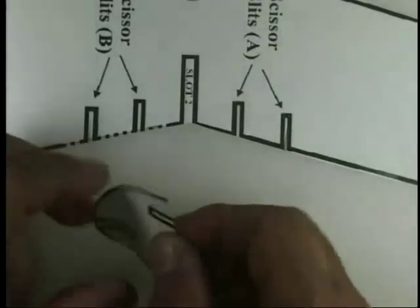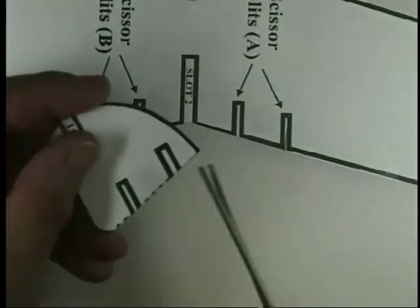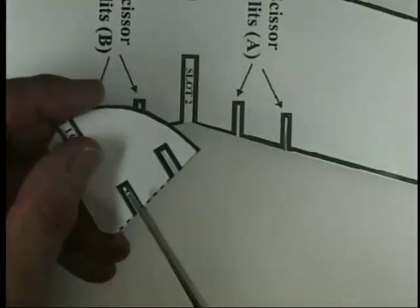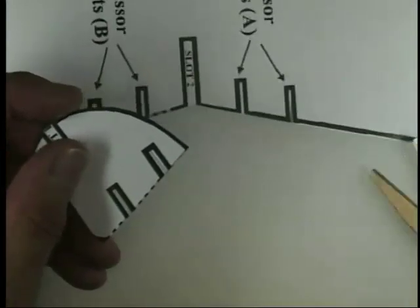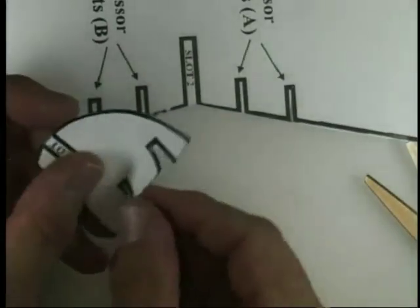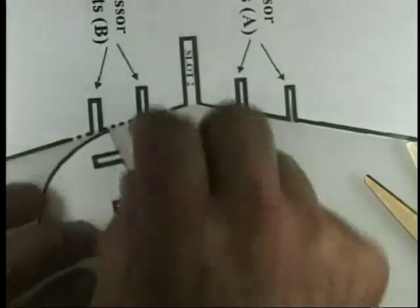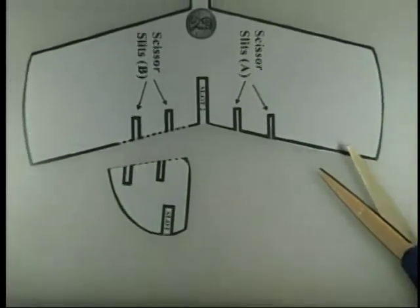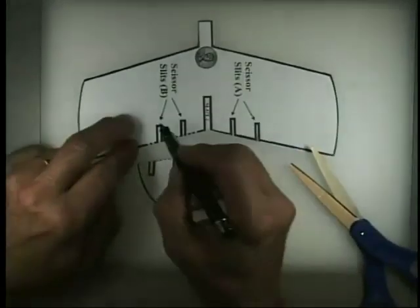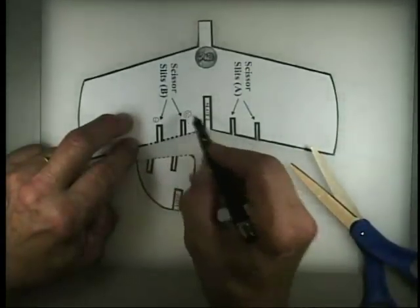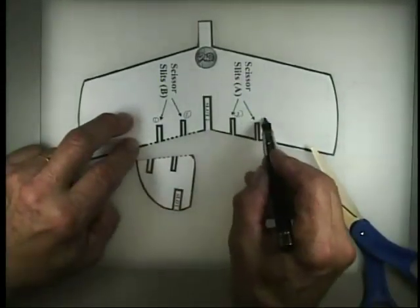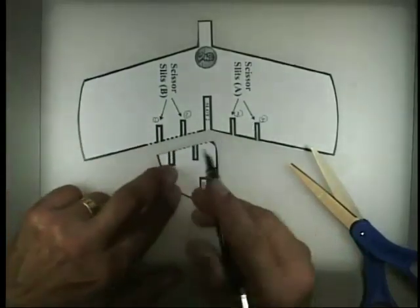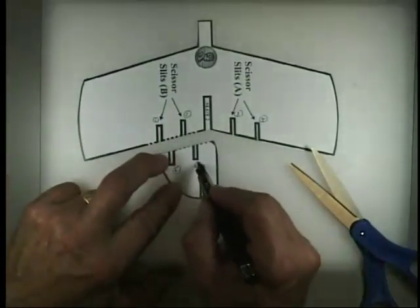On the tail, the same thing. These are just one single cut. One, two. And this will bend up and down. Go ahead and make your six cuts in your model. One, two, three, four, five, six.